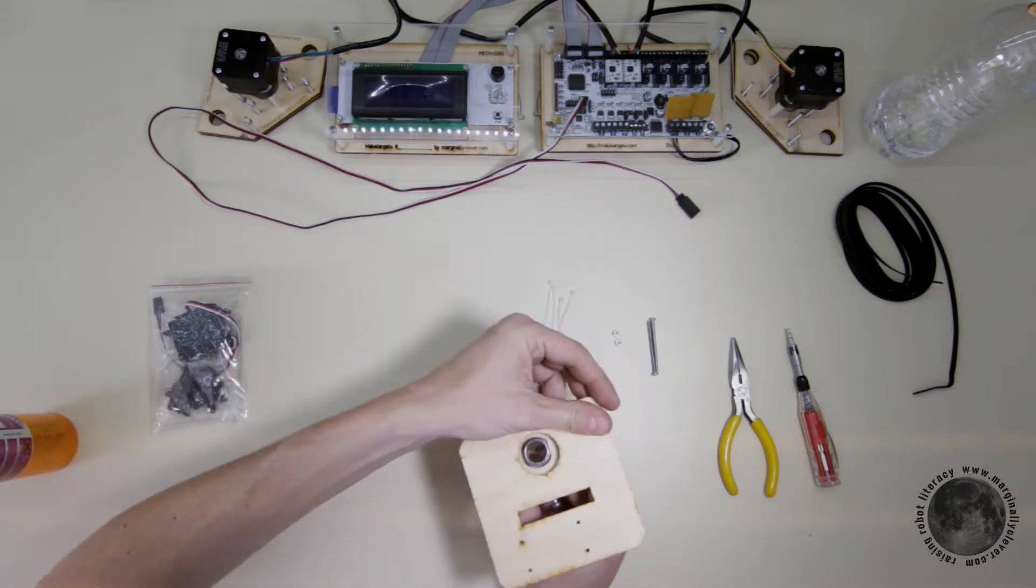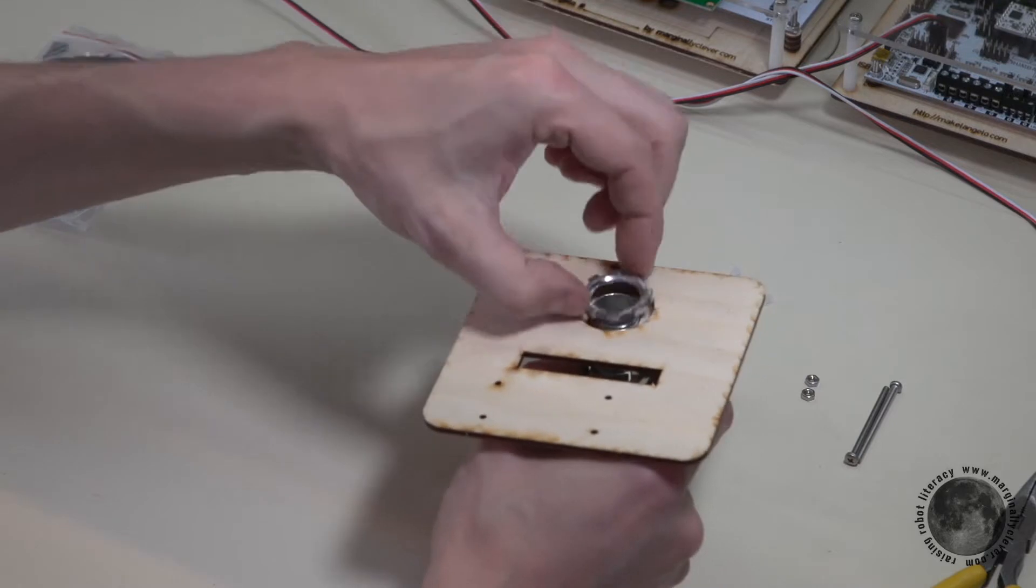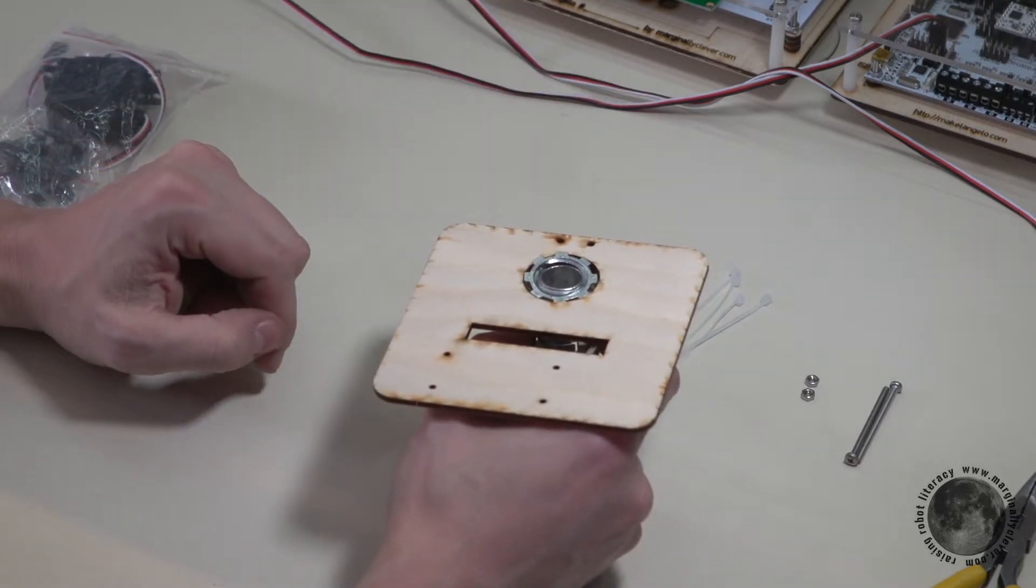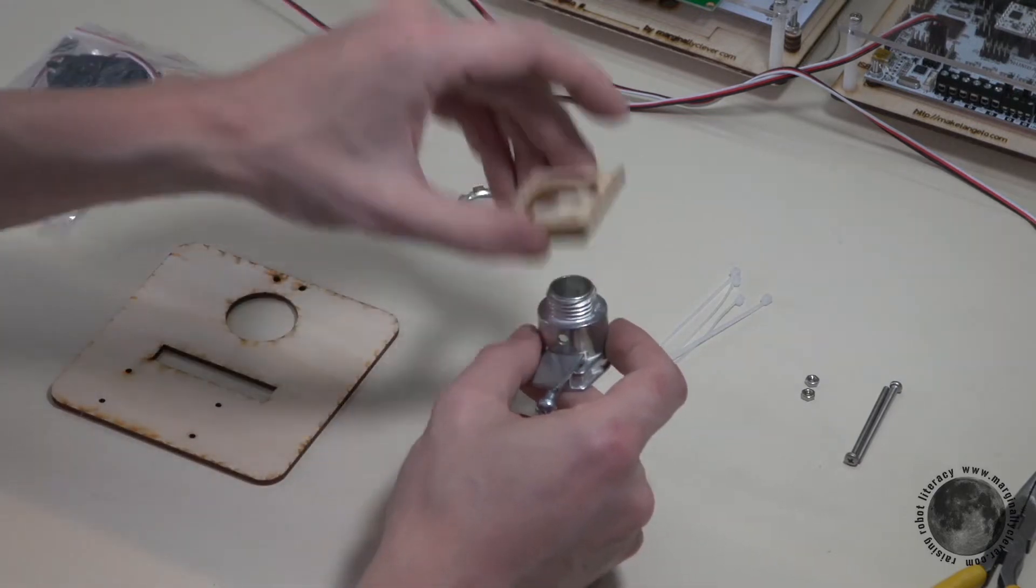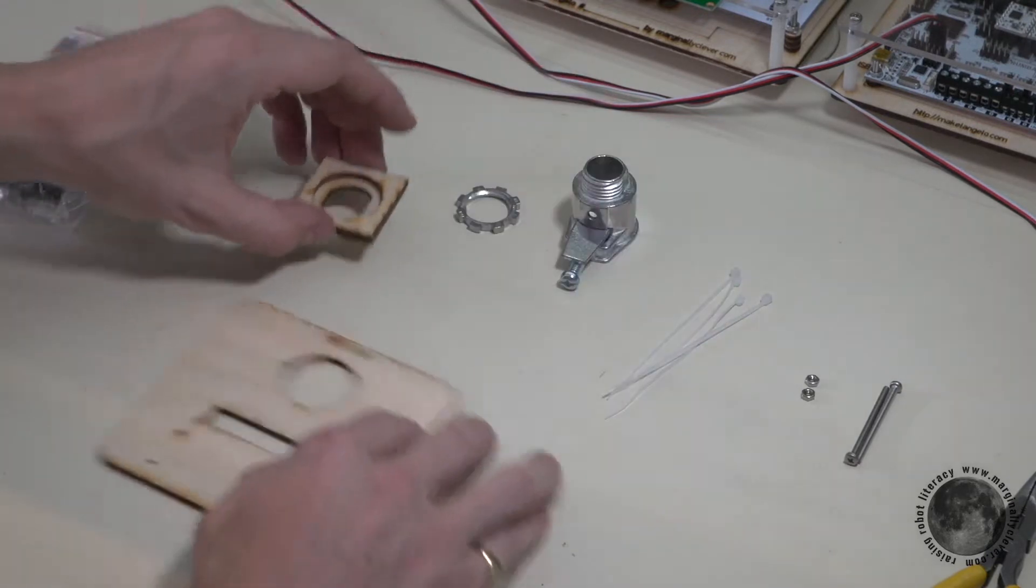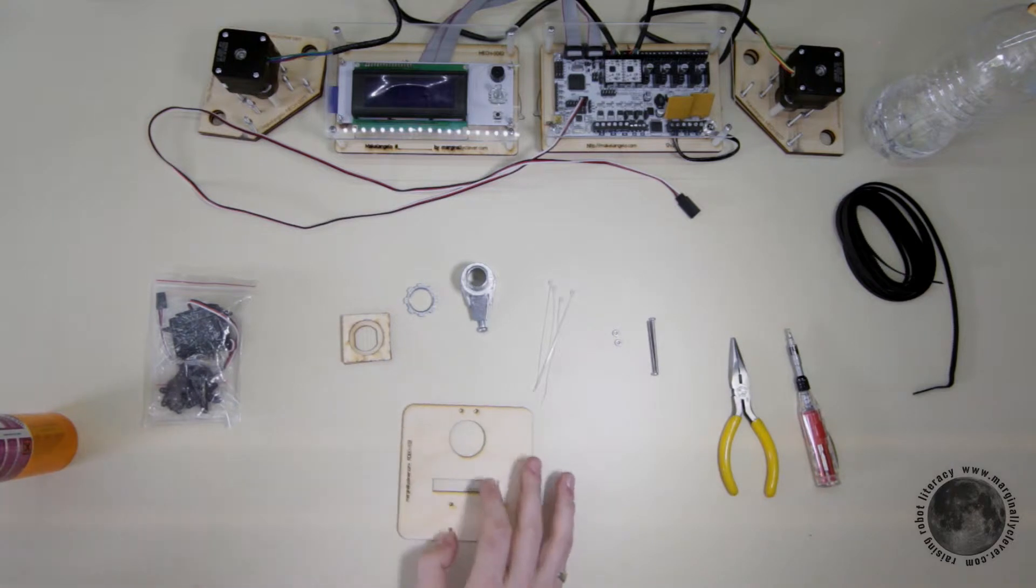This will come in, the screw will go in here, and that will hold it together, and your pen will go in the center of this piece. So now you know what we're going to do. I'll show you how we assemble this.